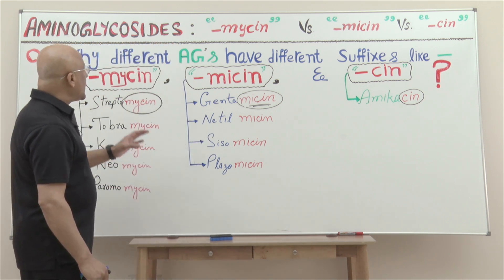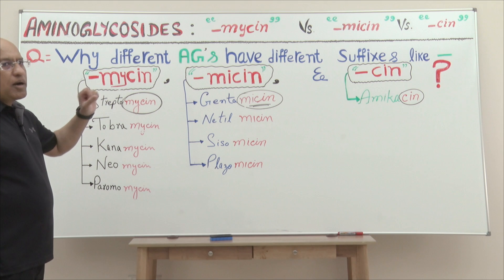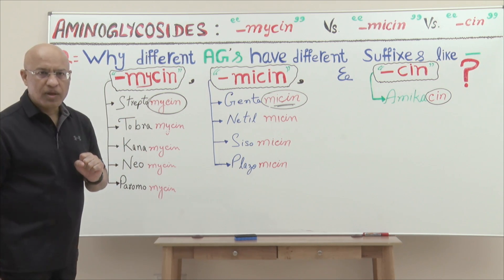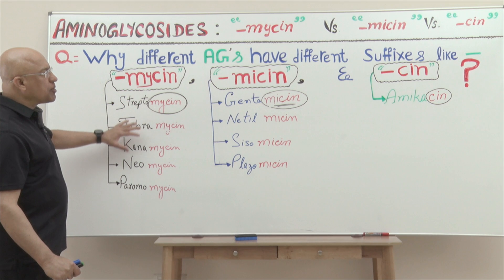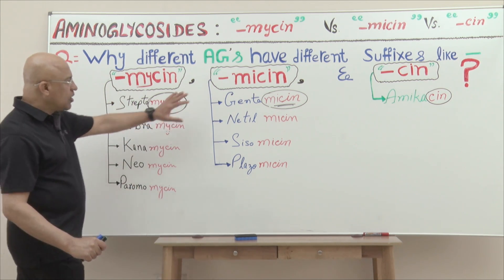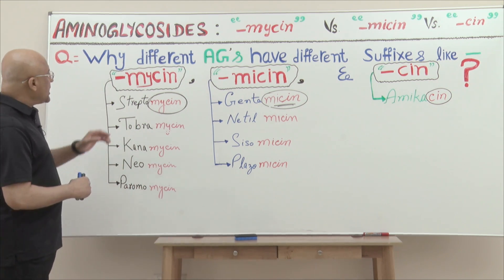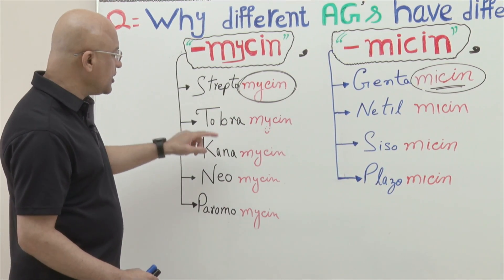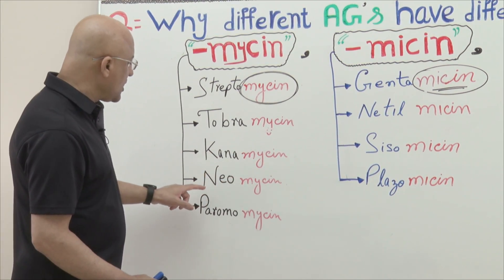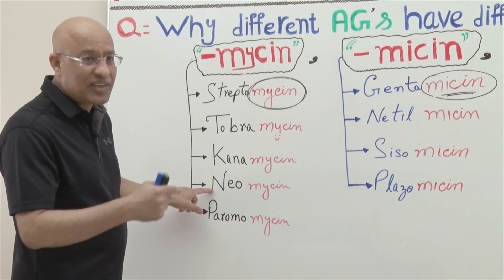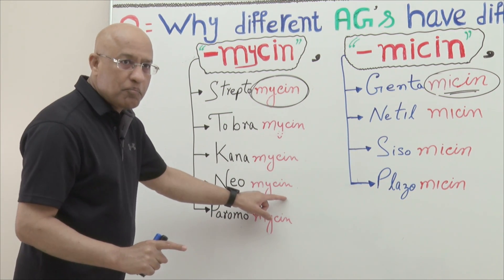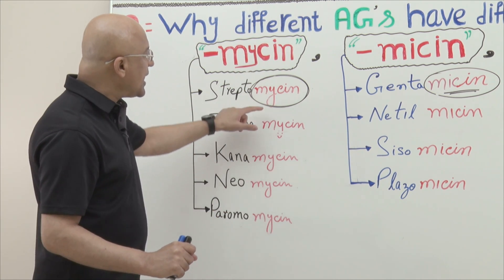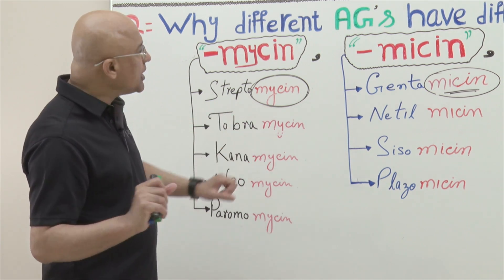Today we are going to talk about aminoglycosides — specifically why different aminoglycoside drugs are named slightly differently. On the board right now I have put the names of 10 aminoglycosides. Some of these aminoglycosides have the suffix '-mycin', for example streptomycin, tobramycin, kanamycin, neomycin, and paromomycin.